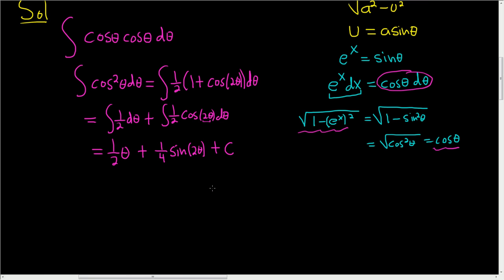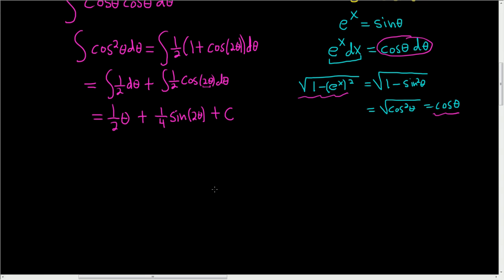At some point, we're going to have to draw a triangle, but we have this pesky sine 2 theta. So we have to use another identity to write this in terms of sine and cosine. So this is equal to 1 half theta, plus 1 fourth, and then the sine of 2 theta is just 2 sine theta, cosine theta. And then we still have the plus c.